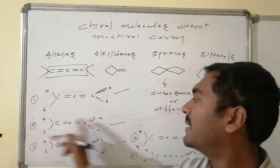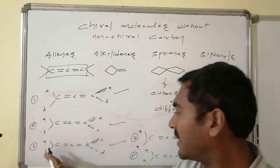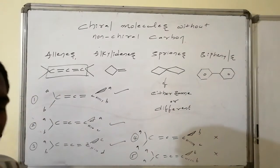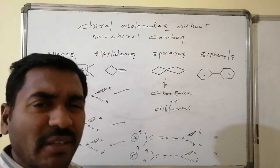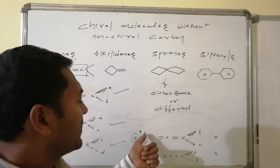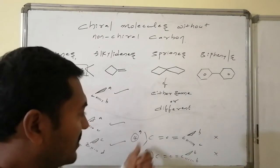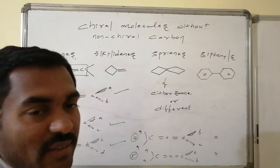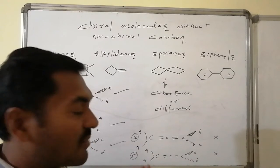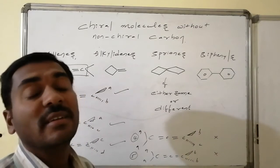If one end has A and A — same valences repeated on one end — it is optically inactive. If both ends have A, A on one and B, B on the other, it is also optically inactive in nature. The end carbon atom, if associated with the same two valences, is optically inactive; in all remaining cases it becomes optically active.